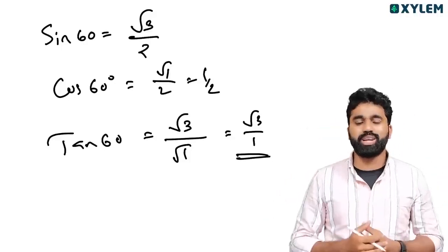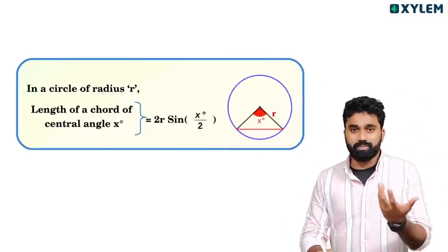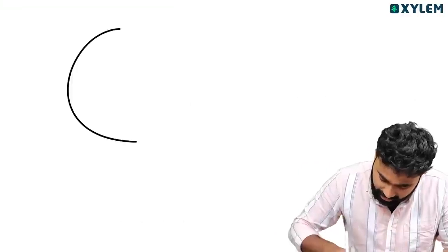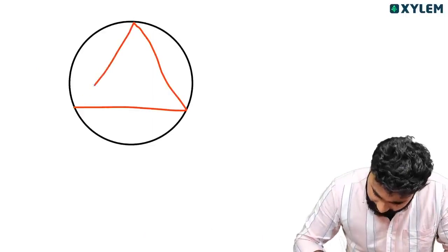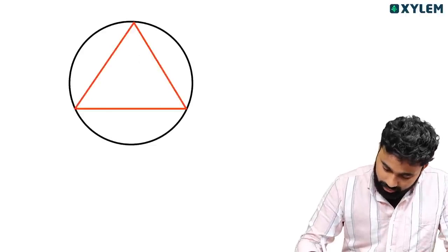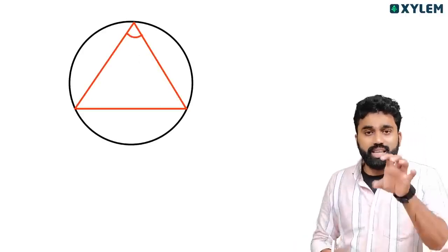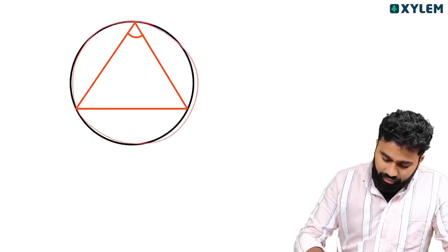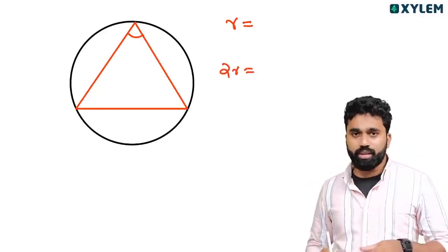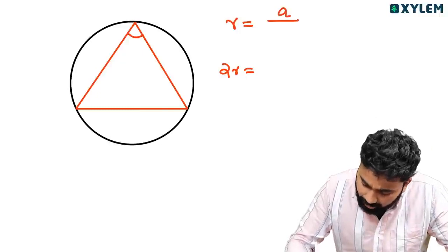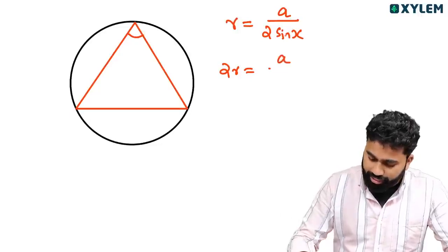In this video on our channel, we are going to study the circumradius of a triangle. Consider a circle — if you learn about this circle, look at the angle. You can see the radius R and the diameter. If you see the radius, it equals A divided by 2 sin x. And the diameter equals A divided by sin x.